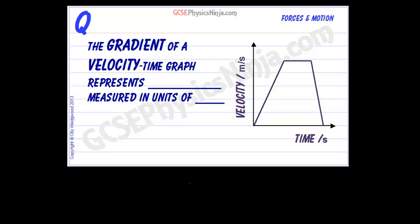So far, we've talked about the gradient or the slope of a distance-time graph representing the speed of an object.